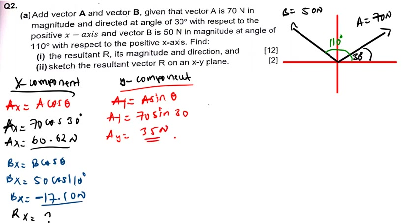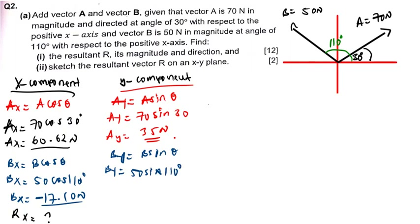Now let's find the y component of vector B. By equals B sin theta. My B is 50 and theta is 110 degrees, so By equals 50 sin 110, which is 46.98 — rounding off, that's 47.0 newtons. The resultant Ry is also unknown at this point.